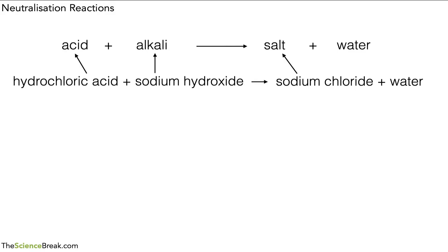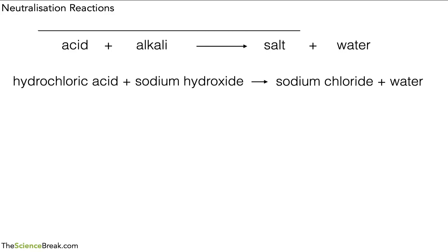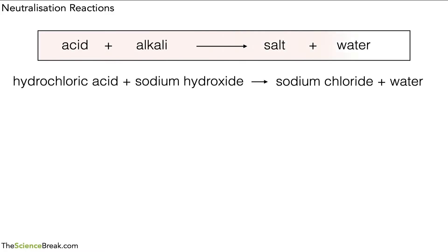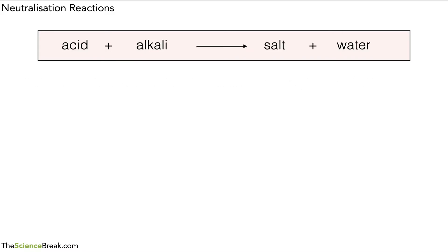We'll always get the production of water in this reaction, so we can just add that at the end. Now we can use this equation to help us predict what salt we get when we react acid and alkali. That's quite an important equation, so let's put a box around it so we know it's important and we should remember it. Let's see how we can use it to work out what salts are made.